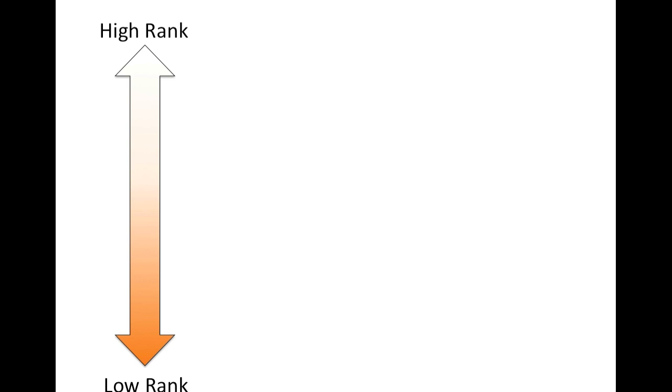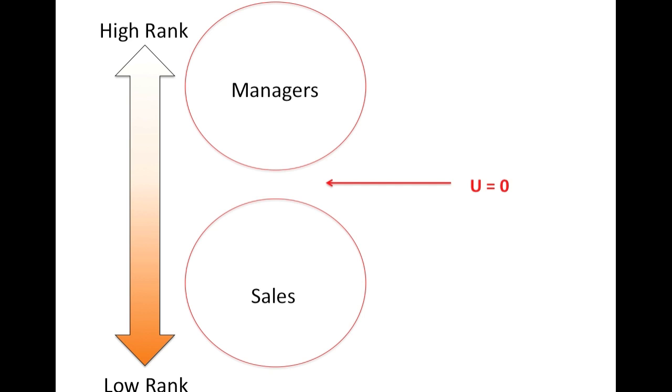If we consider the opposite scenario, in which all of the managers make more money than all of the salespeople, and we had no overlap between the salaries of the groups, this would be the case in which U would equal zero.